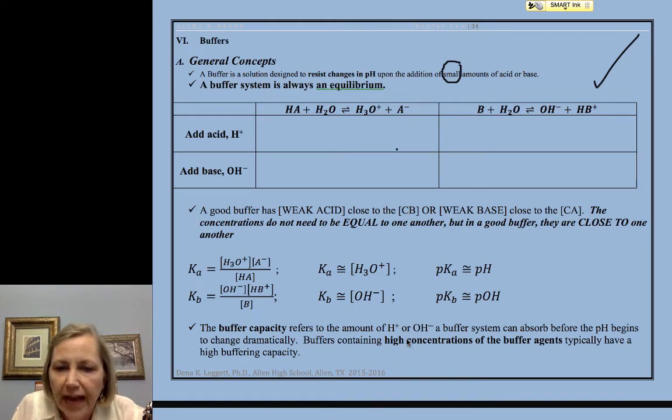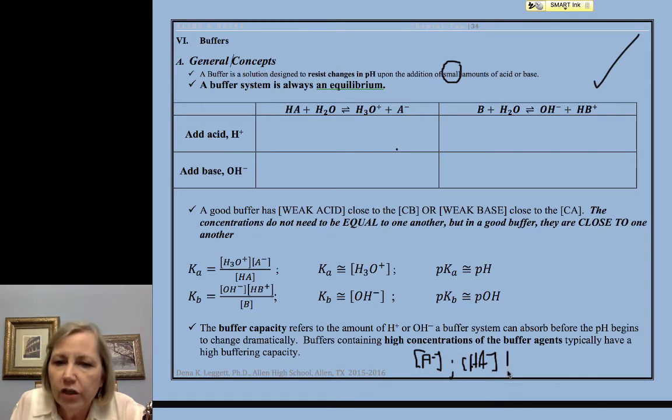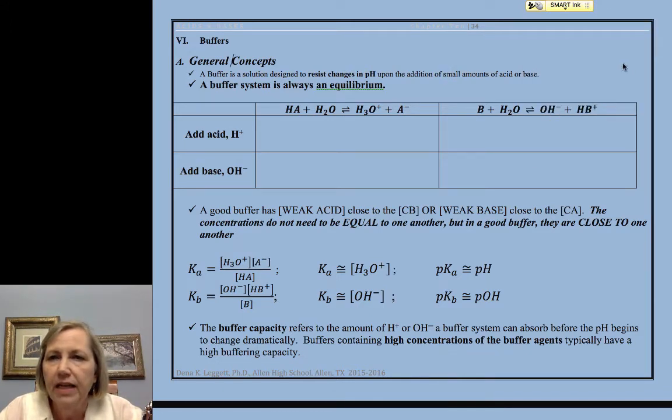So if we have high molarities of our A- and our HA, the higher the molarity of these two, the more acid and base they can absorb. And if you have small molarities, the addition of acid and base will use these up, and we'll no longer have our equilibrium. So as you increase molarity of your buffering components, you increase the buffering capacity.